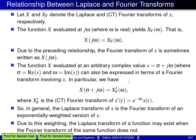We have this relationship where X_F′ is the continuous time Fourier transform of the function x′, where x′ is an exponentially weighted version of x, with the weighting being a real exponential because σ is a real value.